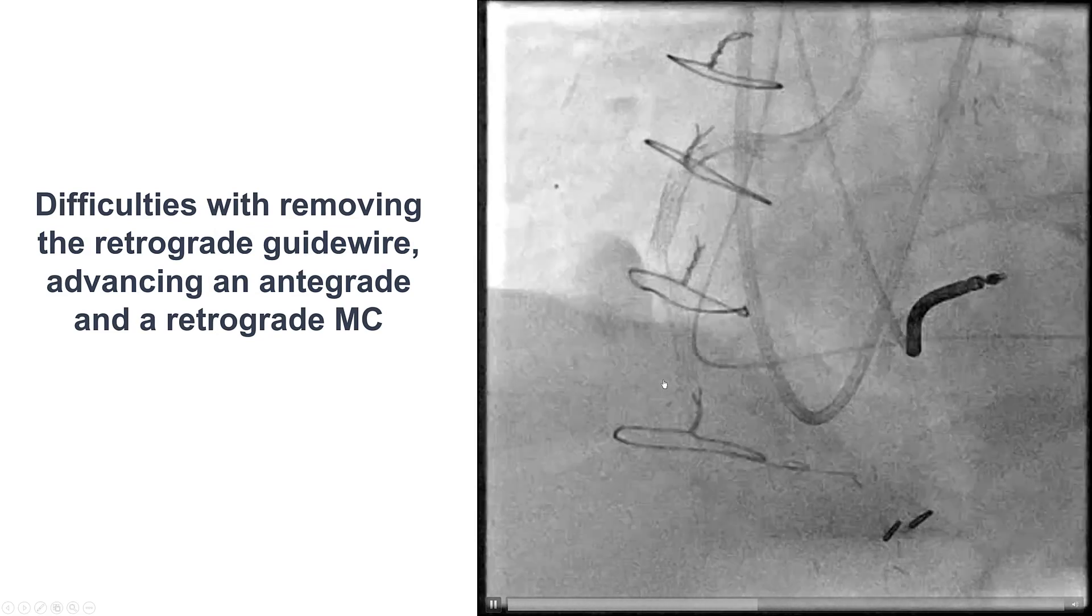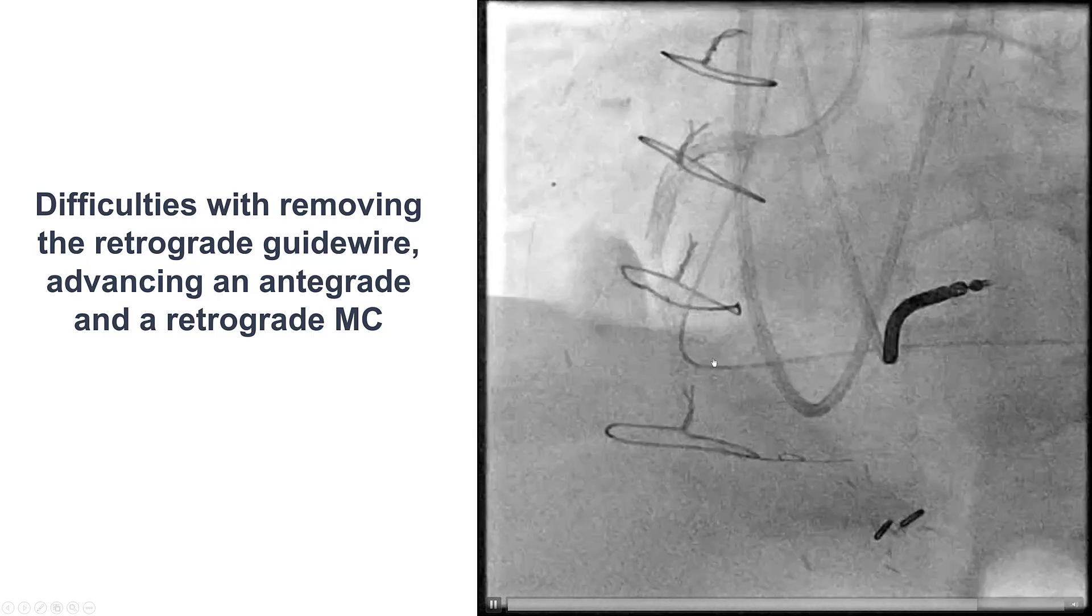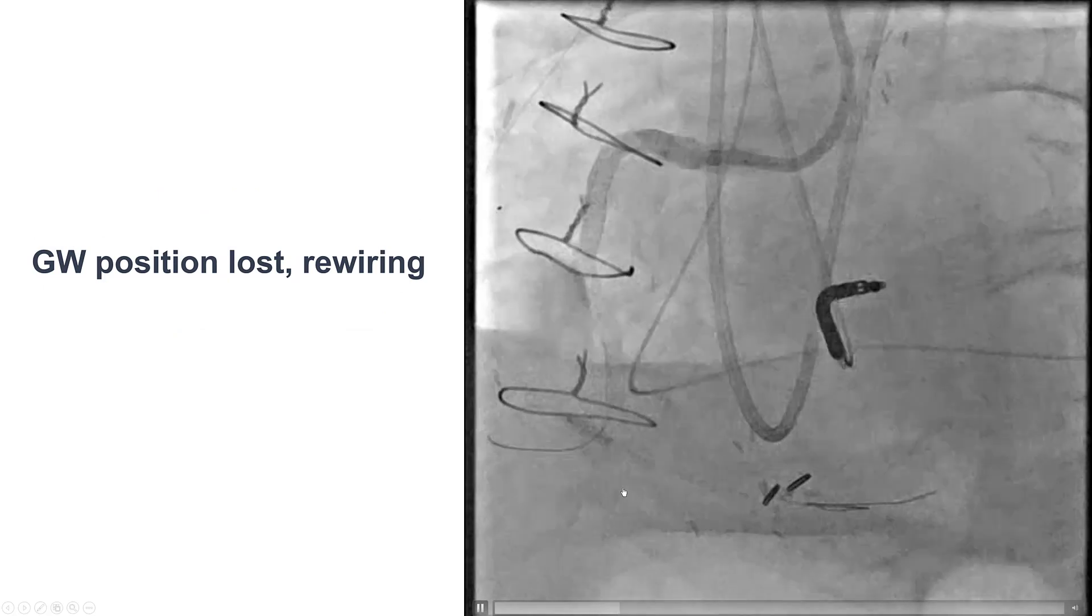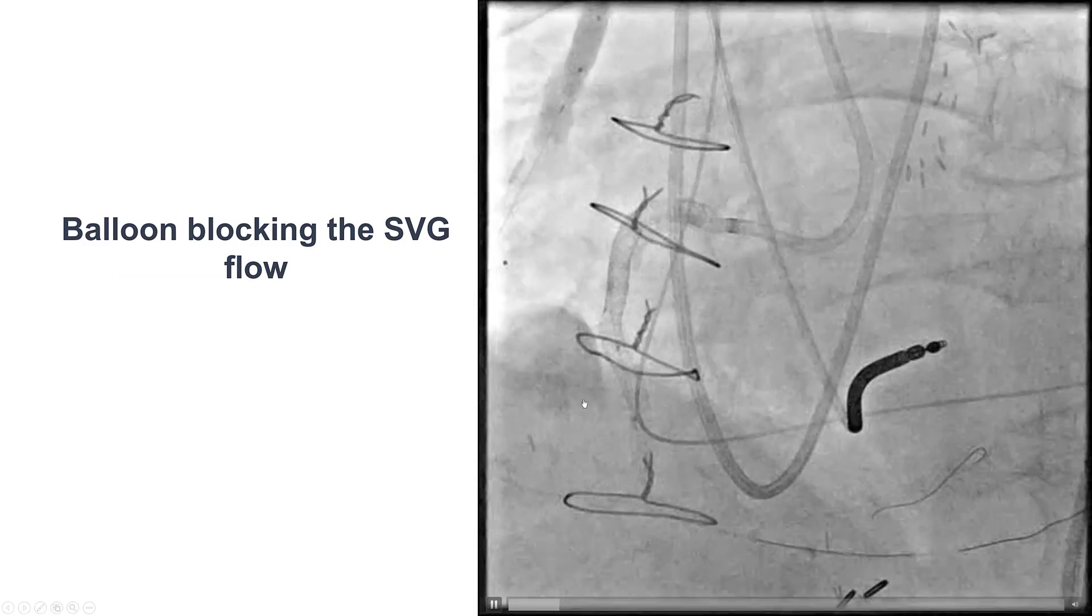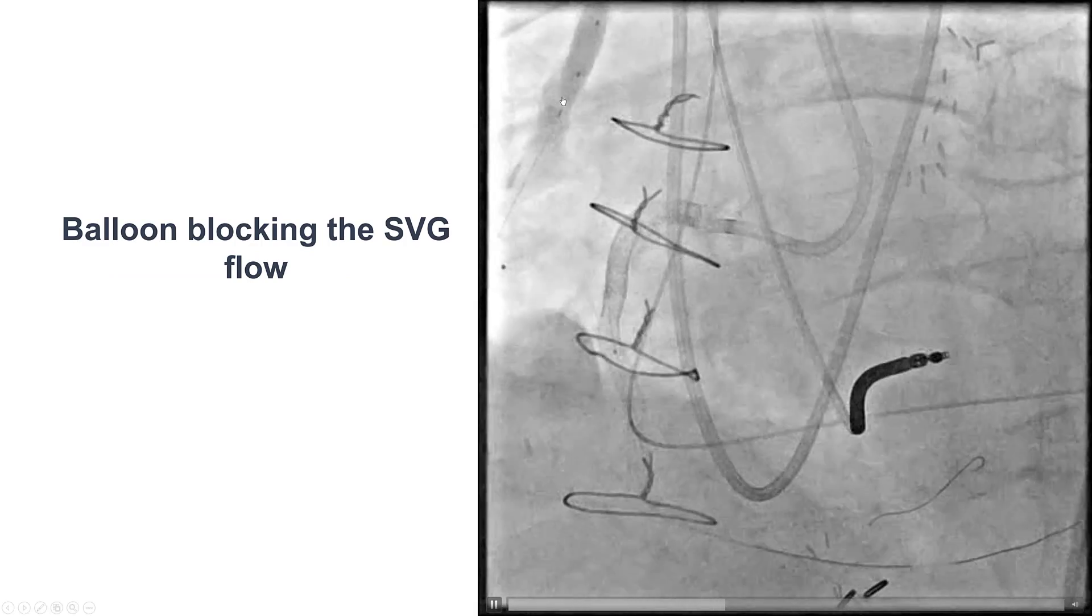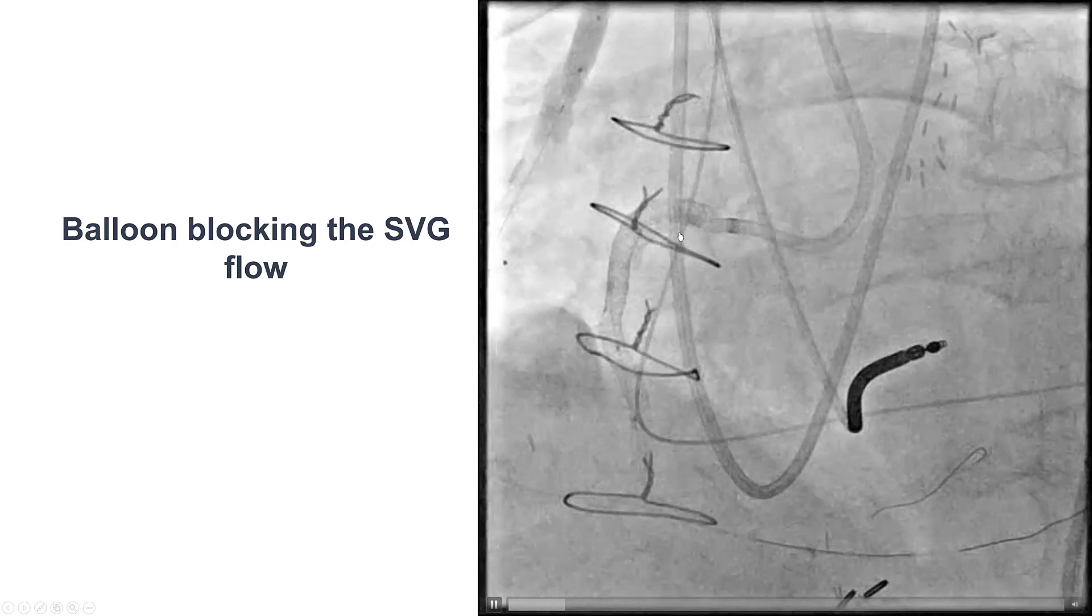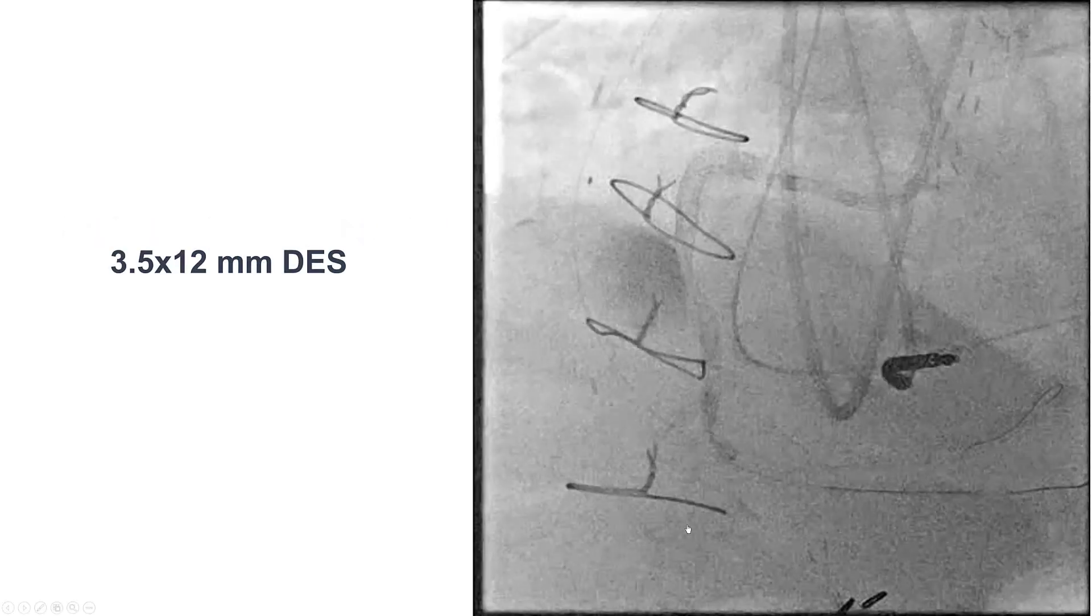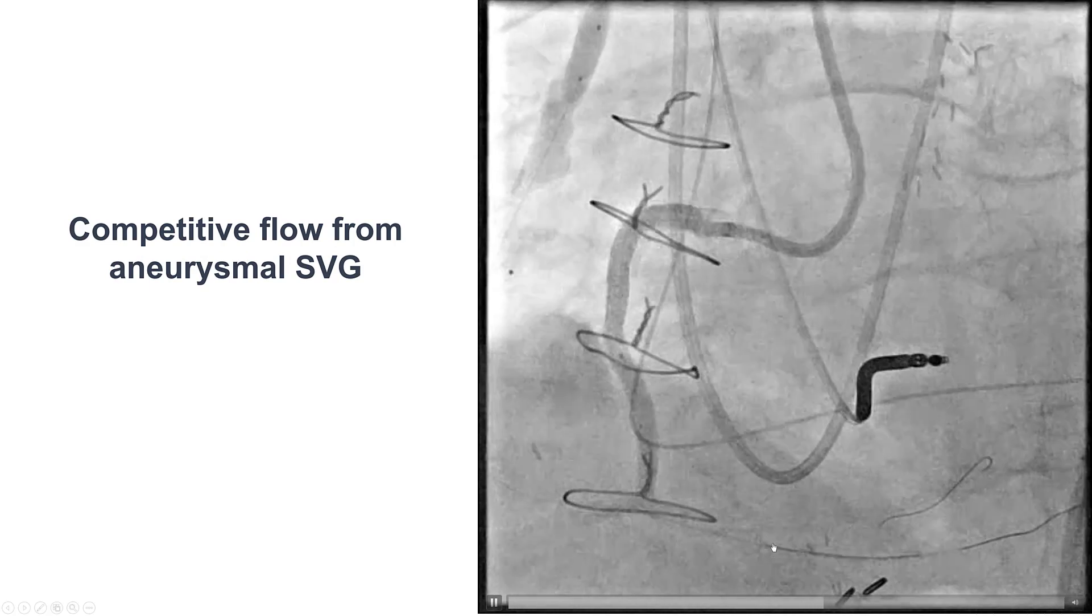We did have difficulty with removing the retrograde gear, but eventually we were successful advancing both an antegrade and a retrograde microcatheter. Difficulties again, lost the position, we had to rewire antegrade, and then we inflated a balloon in the saphenous vein graft to ensure that we had good flow, and that was indeed the case, good antegrade flow through the native right coronary artery. So we placed the stent distally, and then we still had a lot of competitive flow.